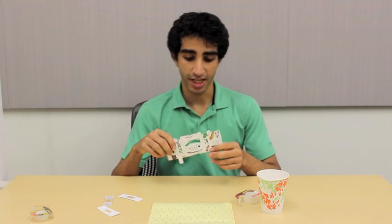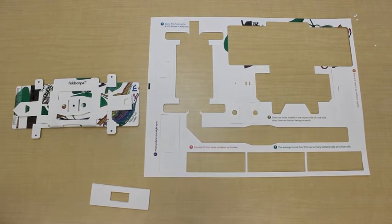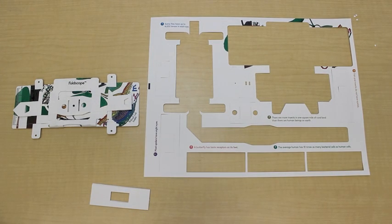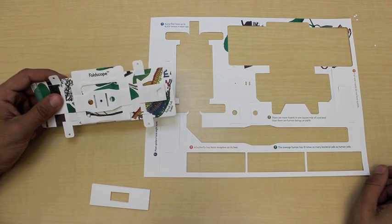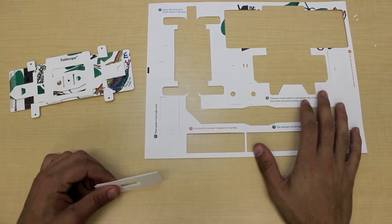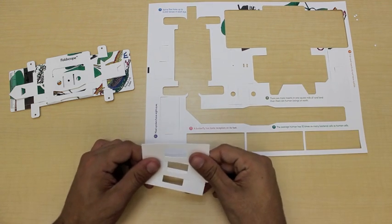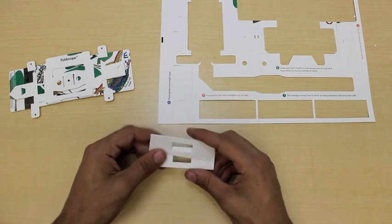You'll also need a folded foldscope to be able to view your slides after you've made them. An important part of microscopy is preparing your own slides. The foldscope accepts standard glass slides. However, if those aren't an option, you can also make your own paper slides. In this step, I've cut out three paper slides from the cutout sheet, and we'll use it to prepare our sample.